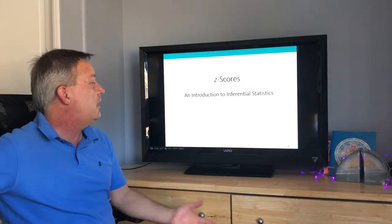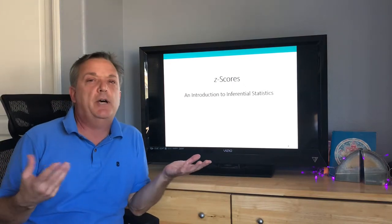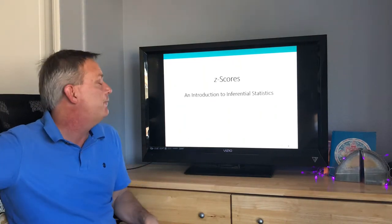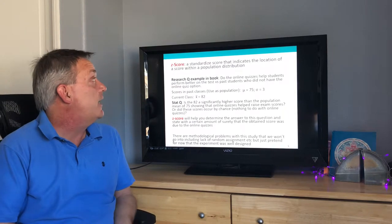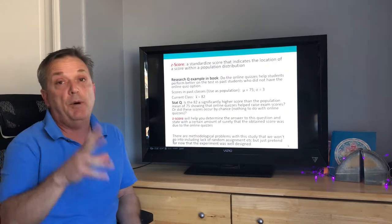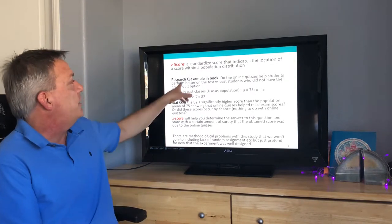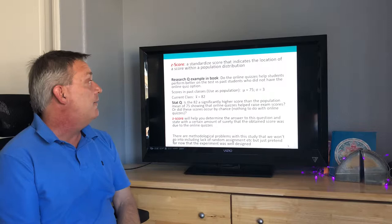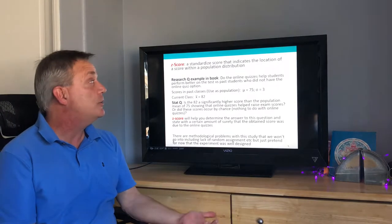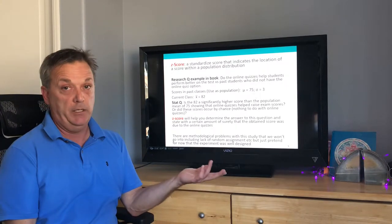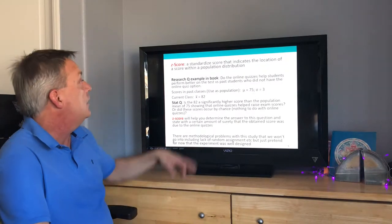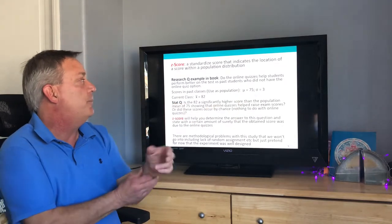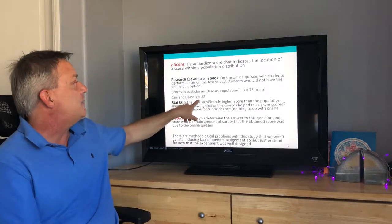Z-scores are a great introduction to inferential statistics and the logic behind it. A z-score is a standardized score that indicates the location of a score within the population distribution. The book uses the example of online quizzes: do they help students perform better on a test versus past students who didn't have the online quiz option? The population mean is 75, the standard deviation is 3, and the current class mean is 82.